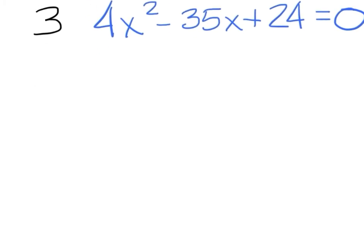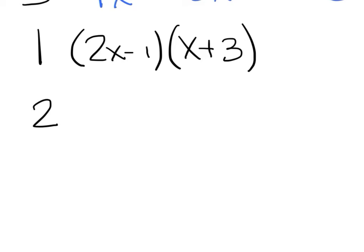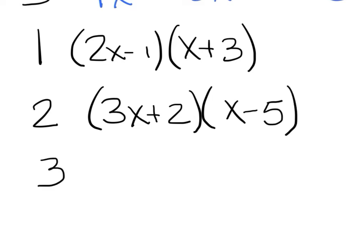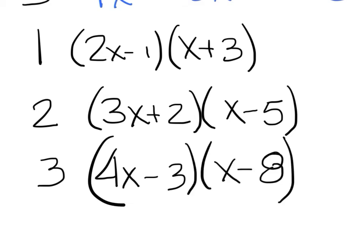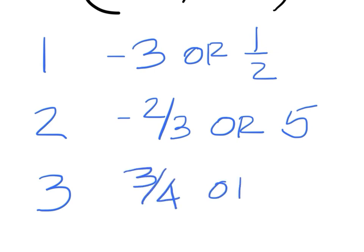Before we get to the answers, here is what you should have had for the factored version of each equation. For number one, that should have been 2x minus 1 and x plus 3. For number two, that would be 3x plus 2 and x minus 5. And for number three, that would be 4x minus 3 and x minus 8. But for the final answers, you should have the following, and this is what we are checking. For number one, you should have negative 3 or 1 half. Two is negative 2 thirds or 5. And three is going to be 3 fourths or 8.